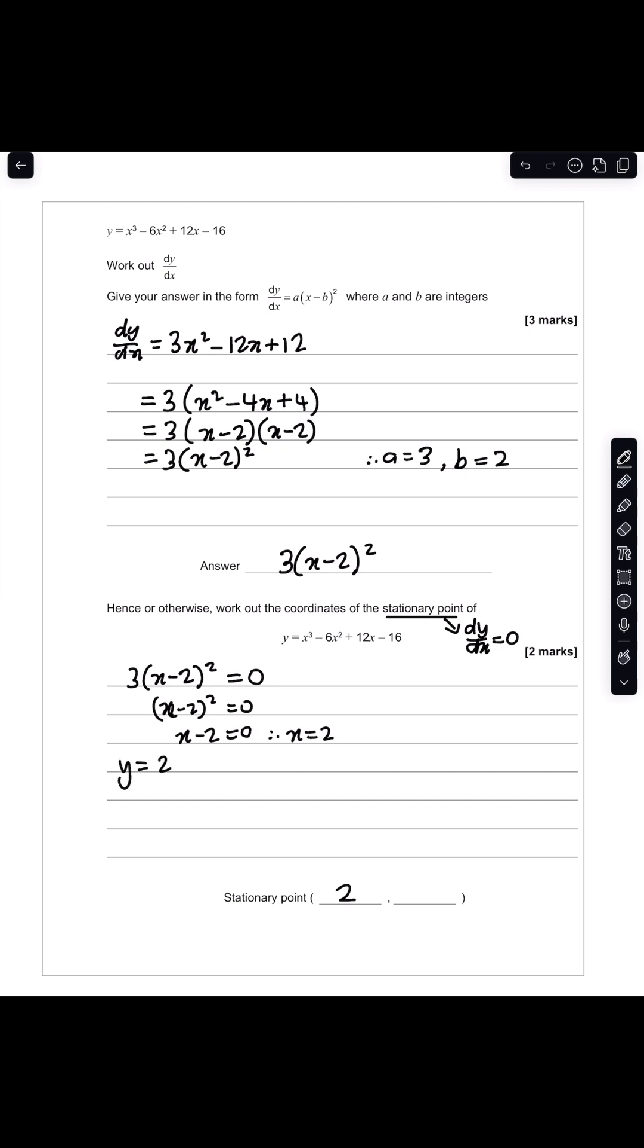So we know y = x³ or 2³ - 6(2²) + 12(2) - 16. So if we simplify that, we have y = 8 - 6(4), which is 24, plus 24 minus 16. Notice these two cancel.